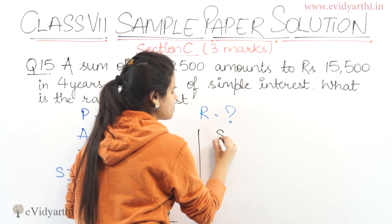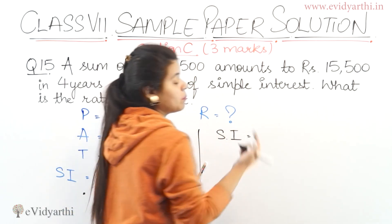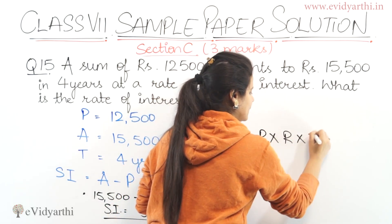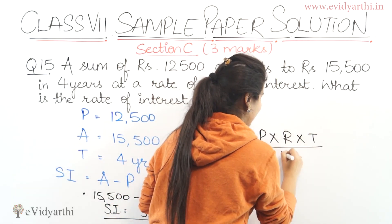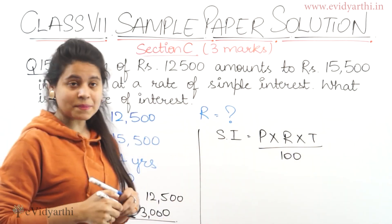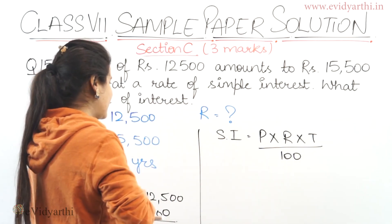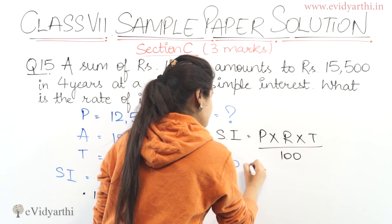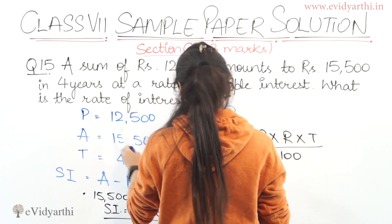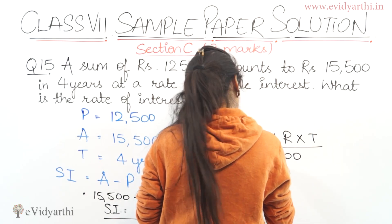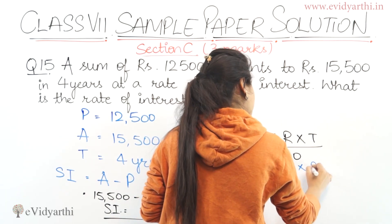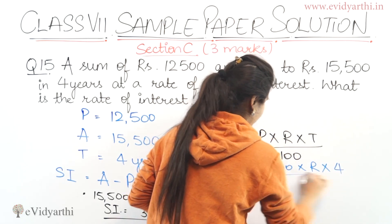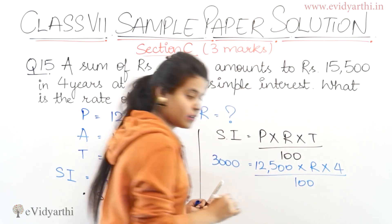We all know that simple interest has a formula: SI = P × R × T ÷ 100. Here simple interest is 3,000, equal to principal 12,500 × Rate (to find) × time 4 years, divided by 100.